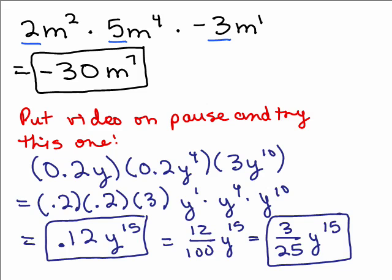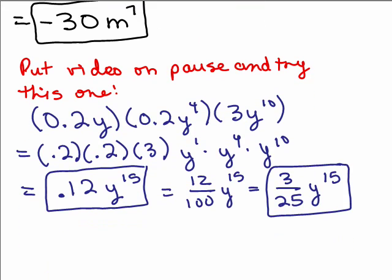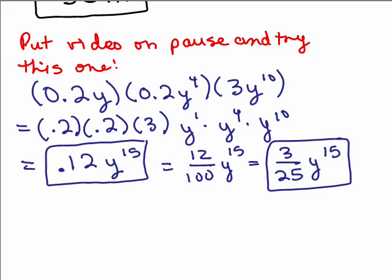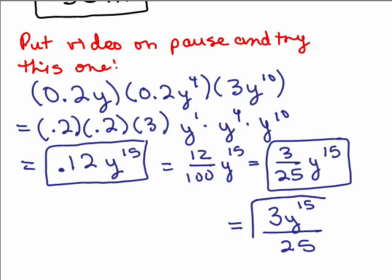It's important to know there is more than one way to write the correct answer. These are two ways — 3 twenty-fifths y to the 15th, some people write this as 3y to the 15th over 25 as a single fraction. Most people will just leave it as 0.12y to the 15th, but all of these are correct.